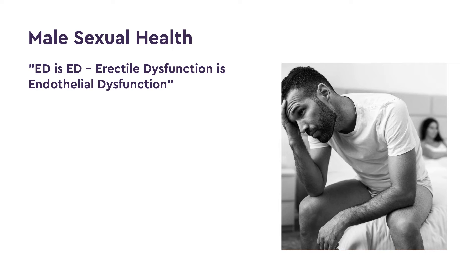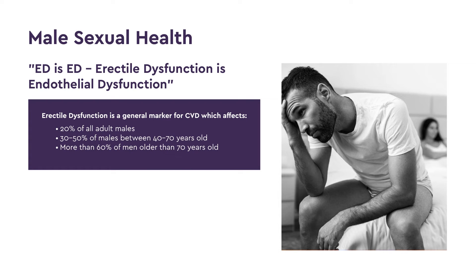Erectile dysfunction is endothelial dysfunction. In fact, erectile dysfunction is usually the first sign of cardiovascular disease. It happens in about 20 percent of all adult males, about 30 to 50 percent of all males between the ages of 40 and 70, and more than 60 percent of men older than 70 years old.